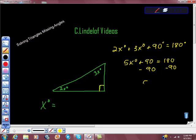And that gives us 5x degrees is equal to 90 degrees. From here what are we going to do? We're going to divide both sides. It's just algebra here. We're going to divide both sides by 5 and get x is equal to 18 degrees.